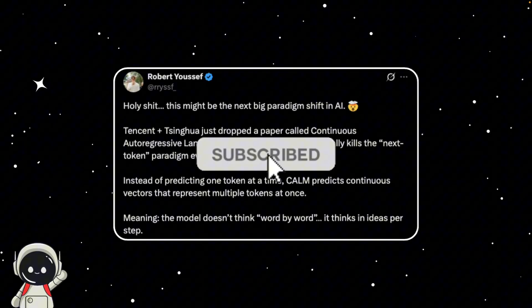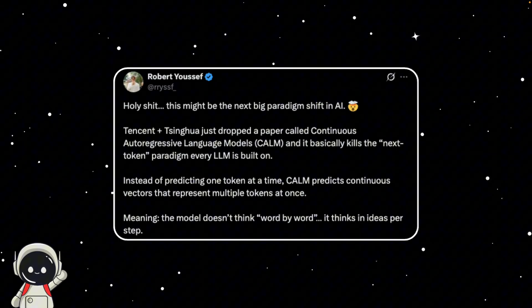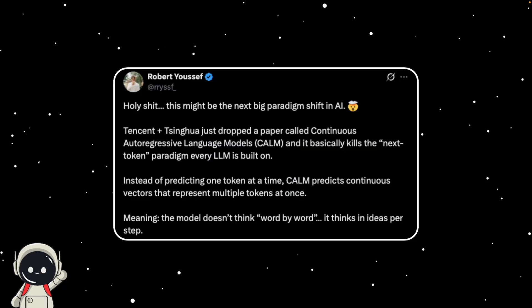Now, a team from Tencent's WeChat AI and Tsinghua University has proposed something completely different. A new way for AI to generate language that might finally break that limit is called CALM, short for Continuous Autoregressive Language Models, and it could completely change how large language models work today.